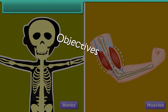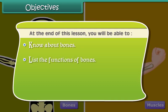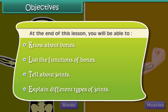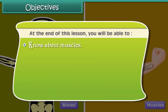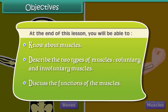Objectives. At the end of this lesson, you will be able to: know about bones, list the functions of bones, tell about joints, explain different types of joints, know about muscles, describe the two types of muscles — voluntary and involuntary muscles — and discuss the functions of the muscles.